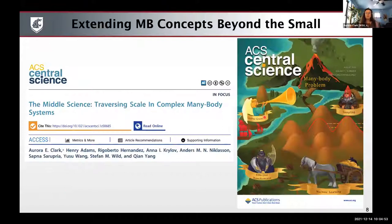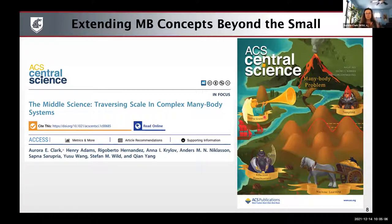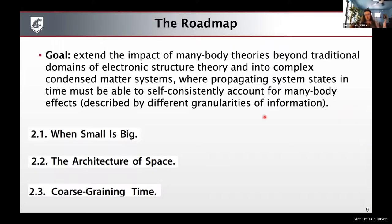This led us within the course of this workshop to a paper published this year in ACS Central Science. This is my plug for this paper — we're going to talk about the content of it in hopes that it will be inspiration for applications and methods you're developing to extend many-body theories to larger systems in more computationally efficient ways. The goal is to take traditional approaches from many-body and electronic structure theory and move into condensed matter, accounting self-consistently for many-body effects at different granularities of information.